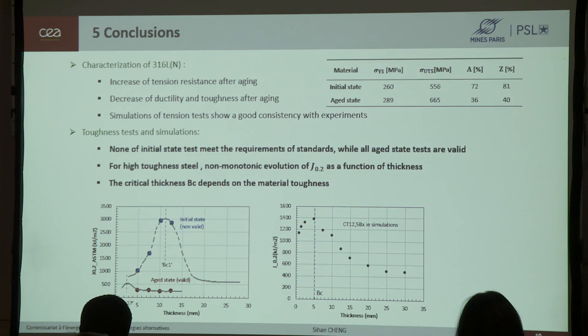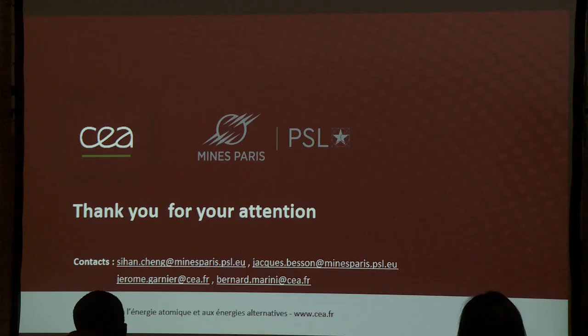Now, this last part is our conclusions. During my presentation, we have looked at the characterization of our material, 316L steel. For the tensile test, we have looked at the increase of tension resistance and decrease of ductility after aging. We use finite element simulations to determine the plastic behavior. And it shows a good consistency between experiments and the simulations. For the part of CT specimens, none of our initial state tests meet the requirements of standards, while all aged states are valid. We found a non-monotonic evolution of J02 with thickness. And there exists a critical thickness, which depends on the material. The more ductile, the greater the critical thickness. So that's all for my presentation. Thank you for your attention.